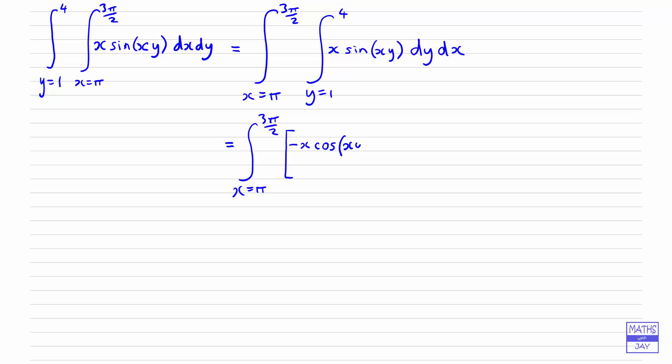The angle as before will be xy, and we need to divide by what we're multiplying the y by, in other words x, and our limits there are going to be put in in a moment, y goes from 1 to 4, and then we want the dx at the end there.